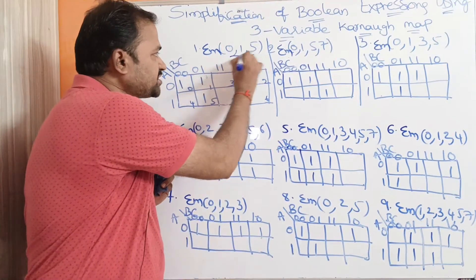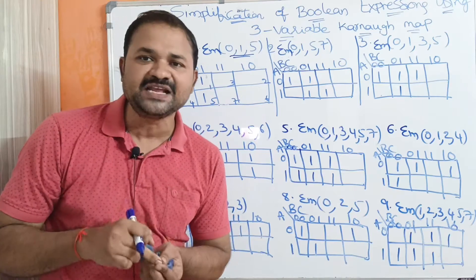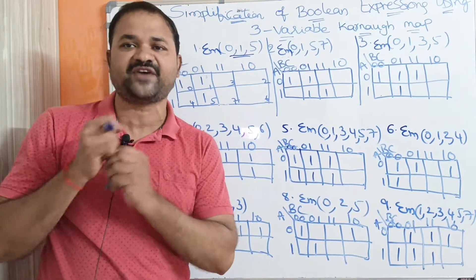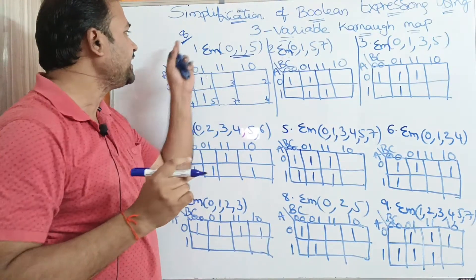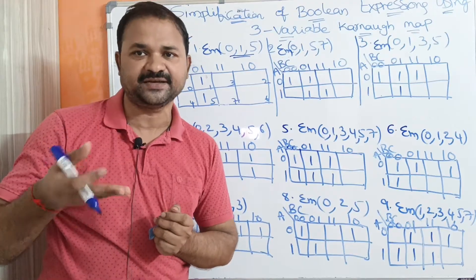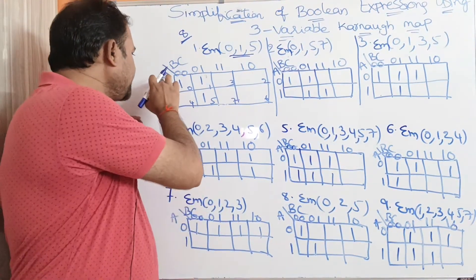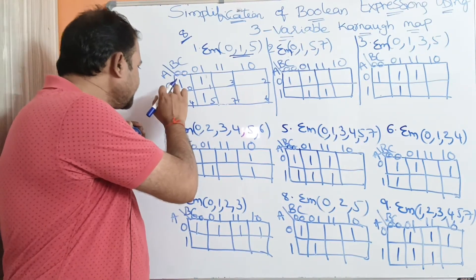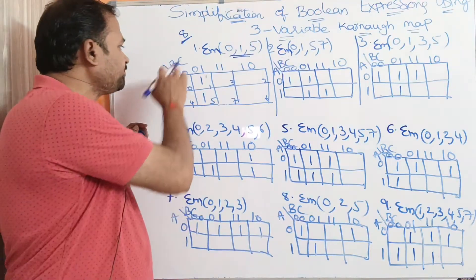Here we have 3 variables, so totally we will get 2 power 3 cells or squares — that is 8 cells. With 3 variables we have 8 minterms. The left-hand side is A, and the right-hand side is B and C. A value 0 means A-bar; A value 1 means A.